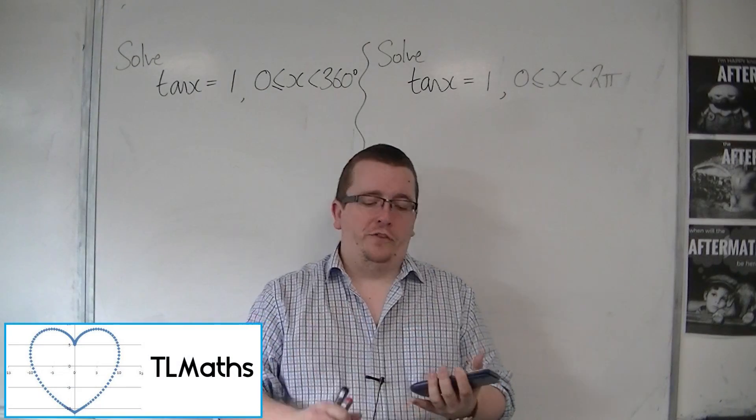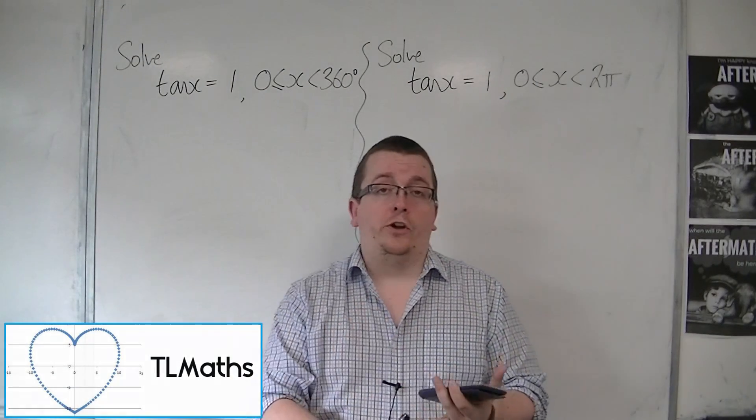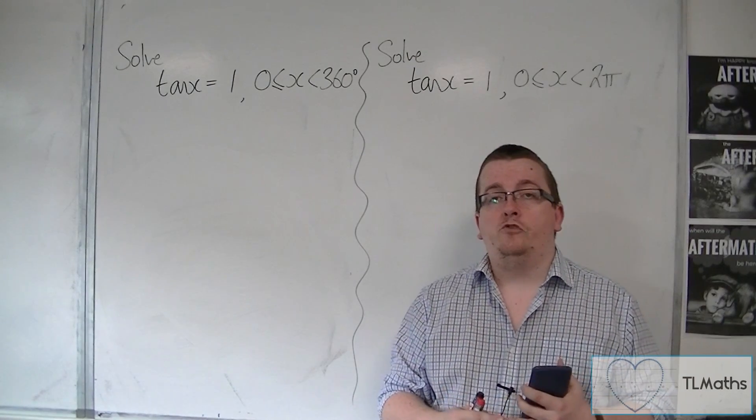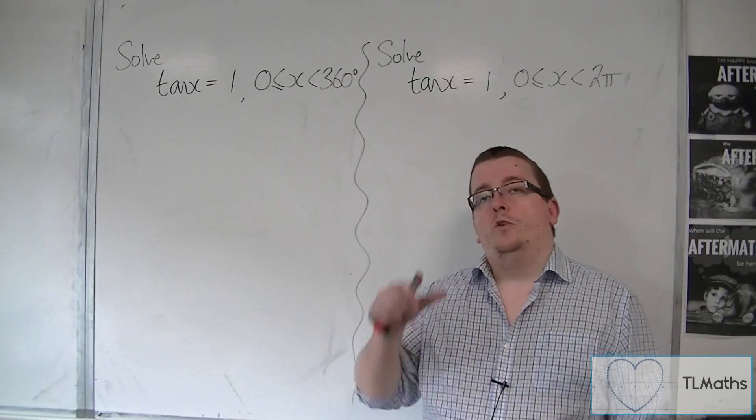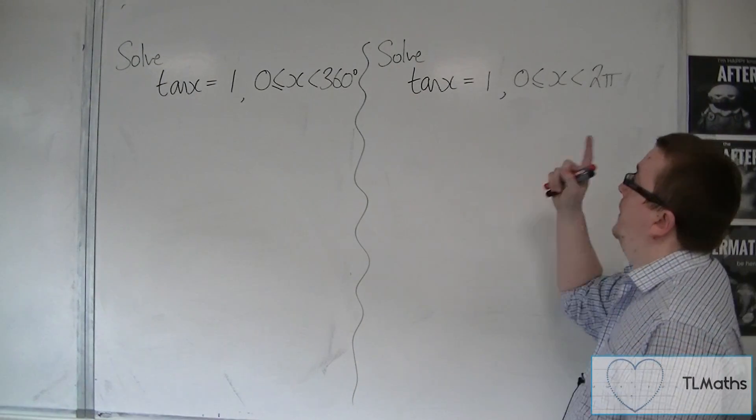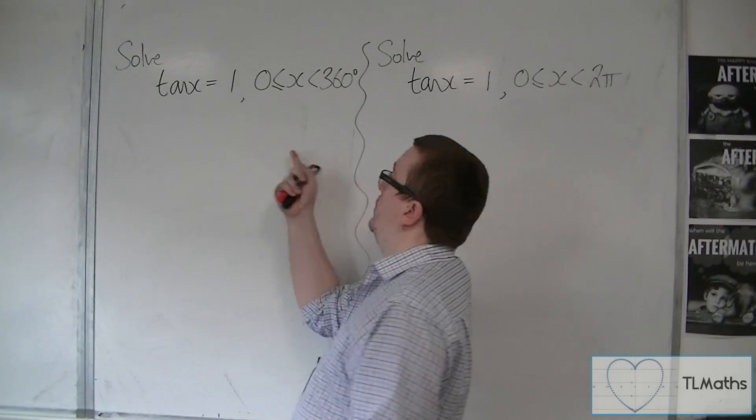So far we have solved sin x equals one half and cos x equals one half between zero and 360 degrees and zero and two pi. We're now going to solve tan x equals one between zero and 360 and zero to two pi, so in degrees and radians.